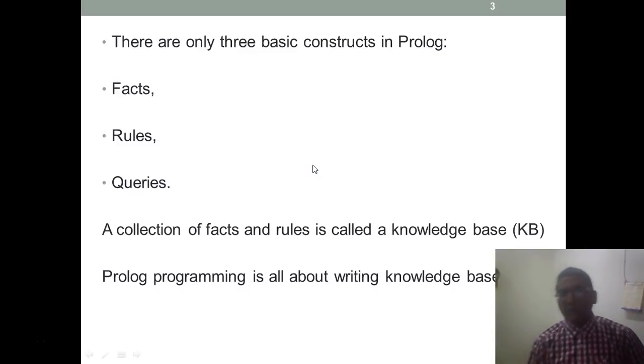So basically if you look in Prolog, there are three basic constructs: facts, rules, and queries. Facts are used to state things that are unconditionally true of the domain of interest. These are statements which we assume to be true. Rules are also used to state information that is unconditionally true of the domain of interest. When we talk of Prolog, our objective is to create a knowledge base. And knowledge base is nothing but a collection of facts and rules.